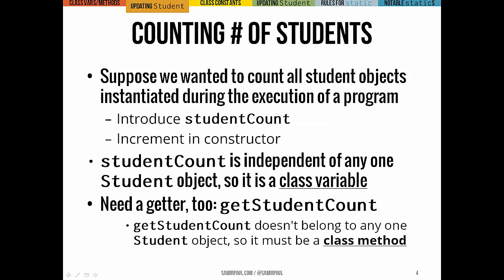Suppose we wanted to count all the student objects instantiated during the run of a program. To do this, we can introduce a variable called studentCount. This variable gets incremented in the constructor every time a student object gets instantiated. Because the variable is independent of any particular student object, it has to be a class variable — a static variable. On top of that, we need one method to access the studentCount variable: a getter for it that returns the variable's value whenever we want it. Because getStudentCount doesn't manipulate any particular student object or its data, we also make this a static method.